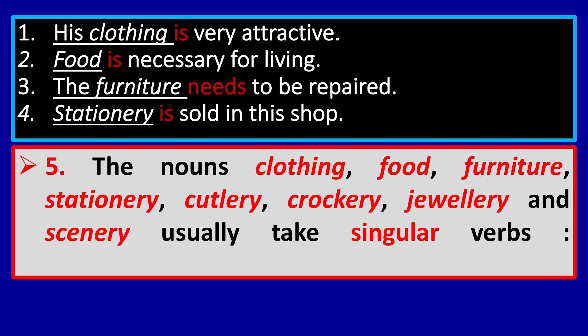His clothing is very attractive. Food is very necessary for living. The furniture needs to be repaired. The stationery is sold in this shop. Words like clothing, food, furniture, stationery, crockery, jewelry, and scenery are uncountable nouns — they always take singular verbs. We have now discussed five rules of subject-verb agreement.